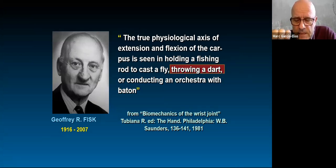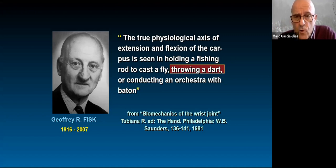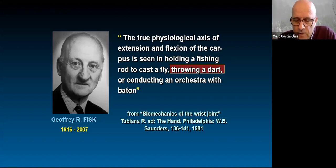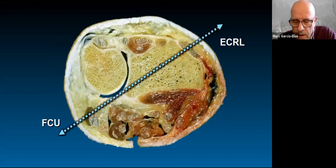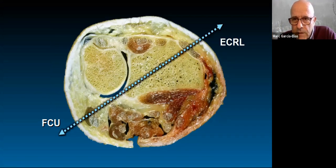Geoffrey Fisk started considering this oblique plane as the true physiological axis of flexion-extension — not the orthogonal sagittal plane, but the dart throwing motion as the more basic motion of the wrist. This motion is most commonly used in activities of daily living, from ulnar deviation-flexion to radial deviation-extension. It is produced on one side by the ECRL and ECRB tendons, and on the other side by the FCU as the antagonist muscle.